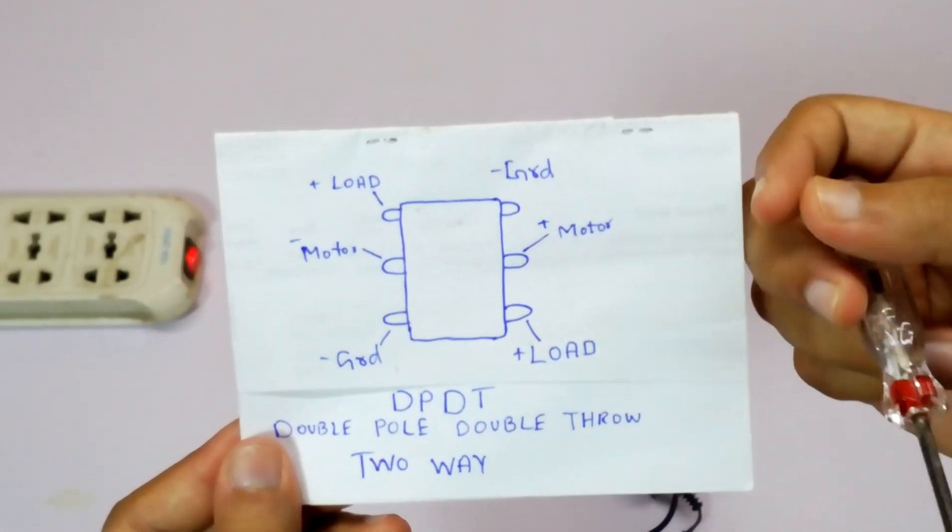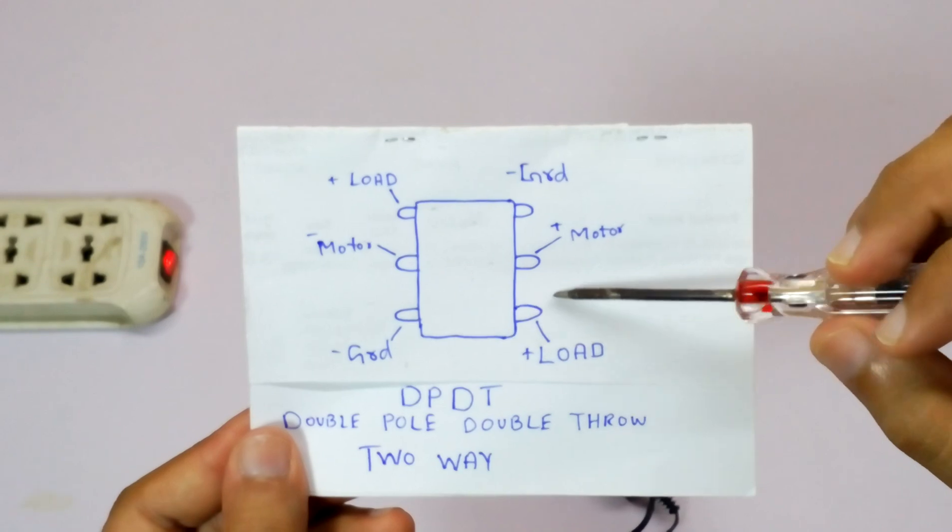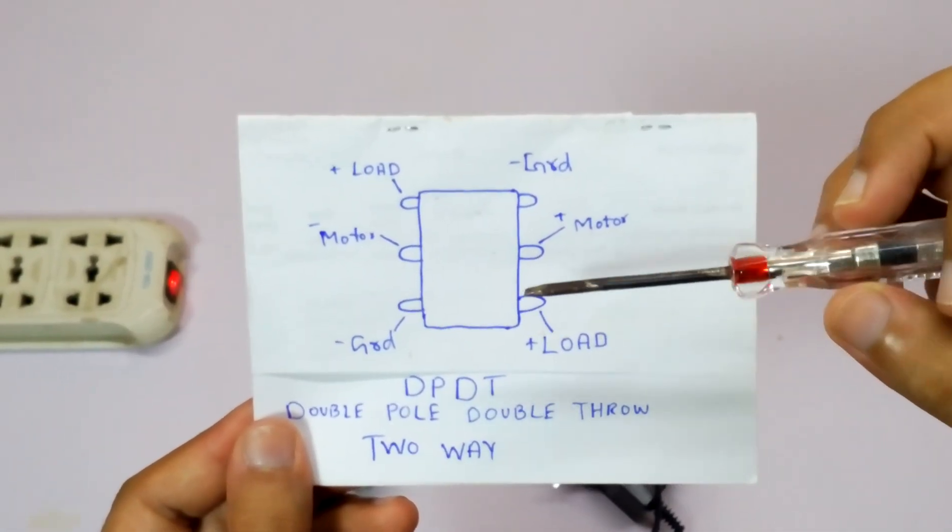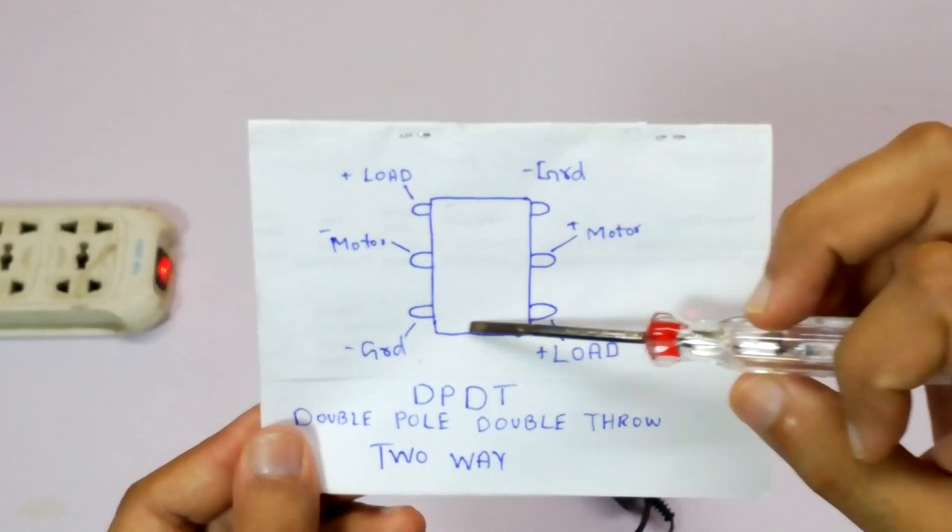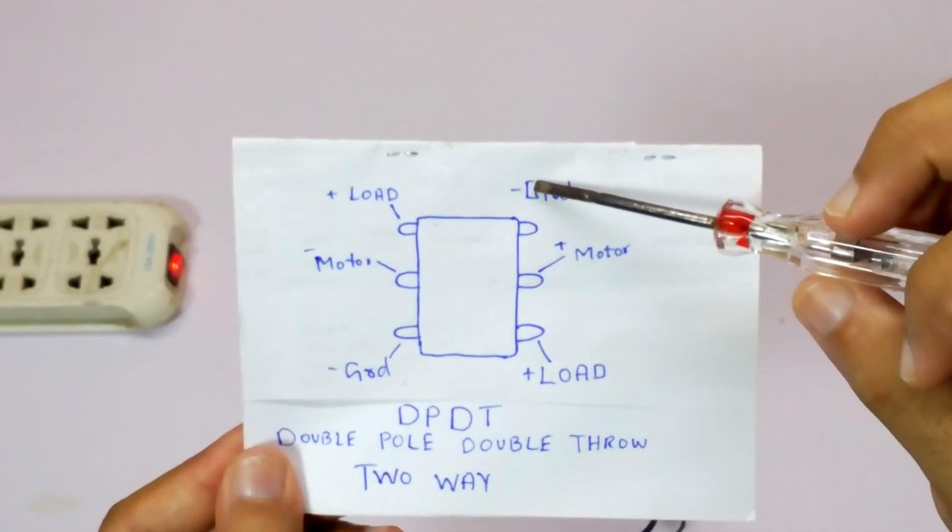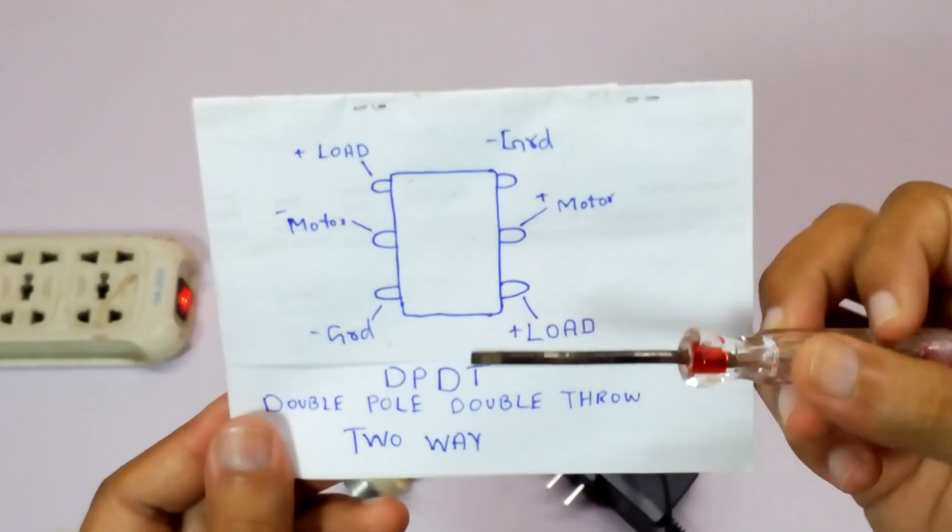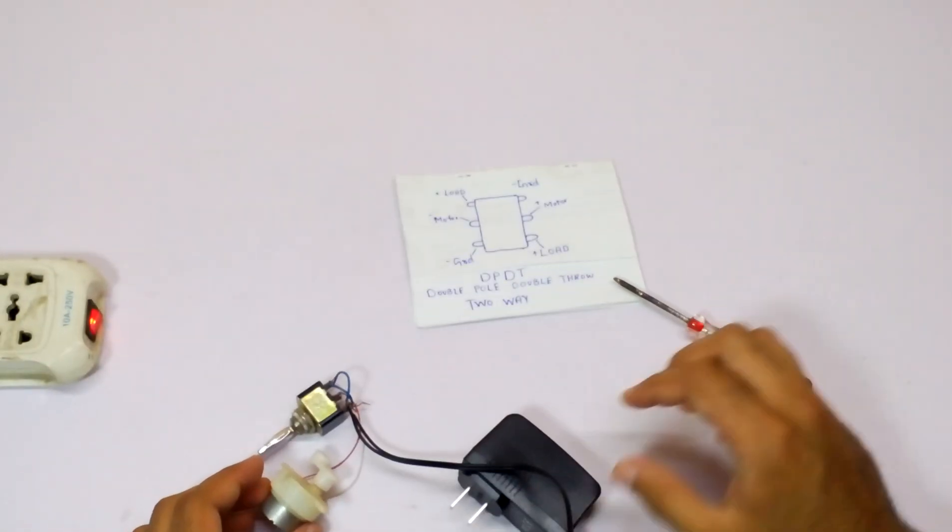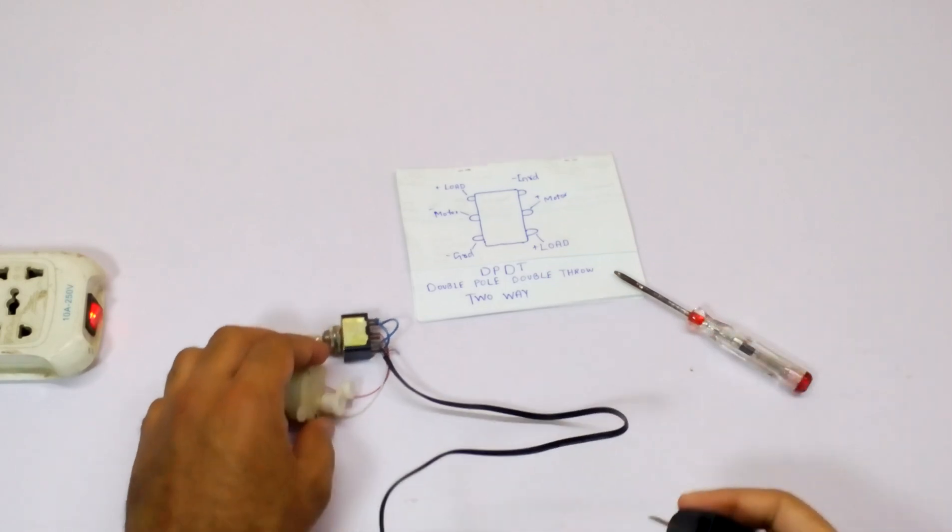On the bottom side we have just changed the way it is connected. This is going to be connected over here onto the ground on the opposite side, and this is going to be connected over here. So as soon as we switch on, it's going to get the power from here. And when we switch to the down side, it's going to get the power from here—the same power but reversed. It's called double pole double throw two-way switch.